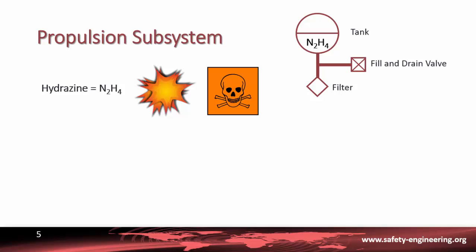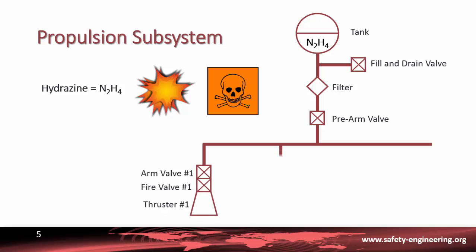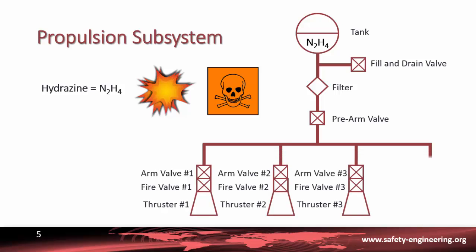Since this is a critical system, there are three levels of safety barriers: a prearm valve, an arm valve, and a fire valve. Note that for each thruster, an arm valve and fire valve exist. These valves are closed during the ground phase.